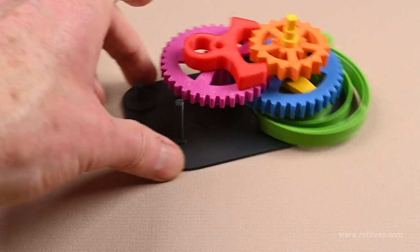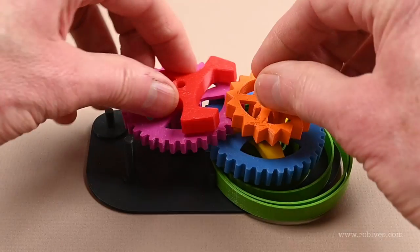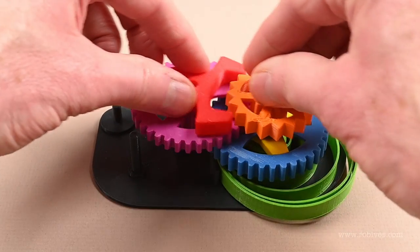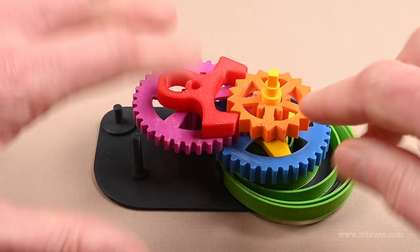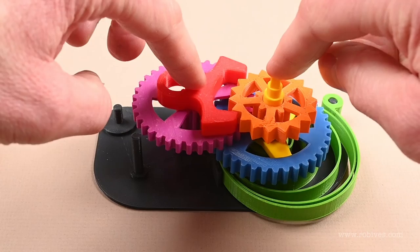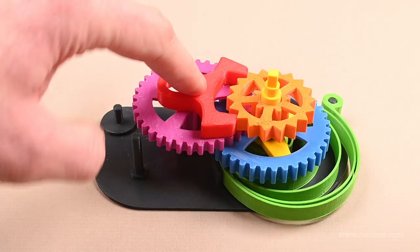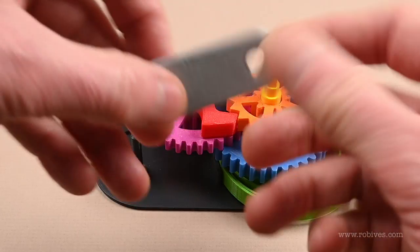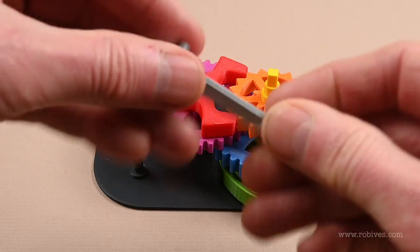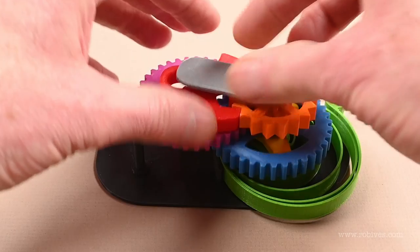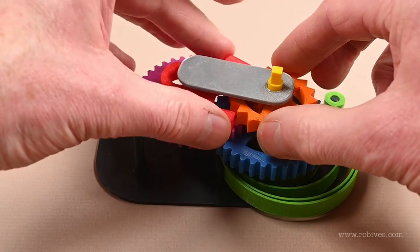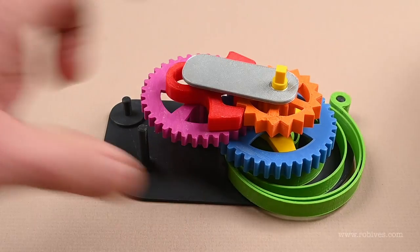The only problem with it now is that the whole thing kind of splays out like that, and that's not going to be a problem once I've got a box to put everything in because these will be fixed at that point. So as a temporary measure, I've made this little plate, and the plate goes there and stops everything spreading out. And there it is.